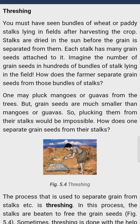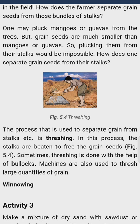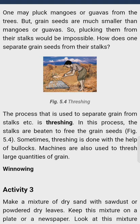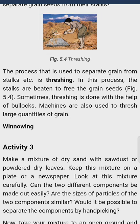खेतों में रखे सैकड़ों गठरों पर चिपके अनाज के दानों की संख्या की कल्पना कीजिये। One may pluck mangoes or guavas from the trees but grain seeds are much smaller, so plucking them from their stalks would be impossible. The process used to separate grain from stalks is threshing. In this process, the stalks are beaten to free the grain seeds. Sometimes threshing is done with the help of bullocks; machines are also used to thresh large quantities of grain.